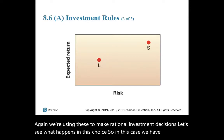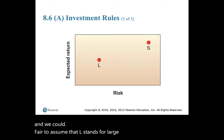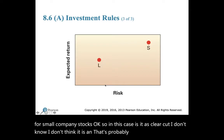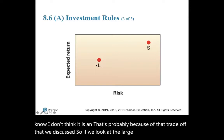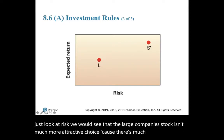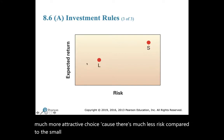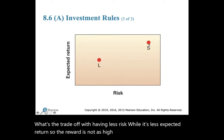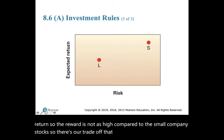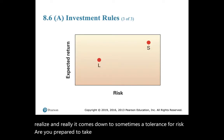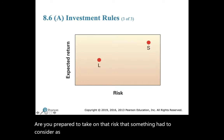Now consider large company stocks (L) versus small company stocks (S). This is not as clear-cut. The large company stock is more attractive in terms of risk — much less risk compared to small company stocks — but the trade-off is a lower expected return. The small company stock offers a higher expected return but higher risk. Ultimately, it comes down to your personal tolerance for risk as an investor.